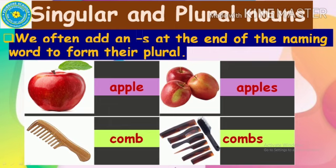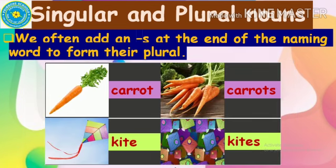Usually we add an S at the end of the naming word to form its plural. Like a single comb is called comb and if there are many combs, it is called combs — only an S is added at the end. Can you tell what is the first picture? Carrot. And what is the second picture? These are carrots. And what is the next picture? Kite. And what is the plural form of kite? Kites. Well done, kids.